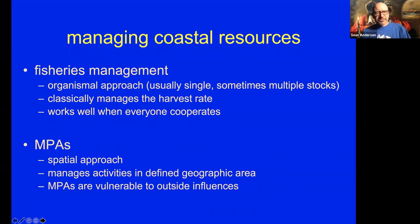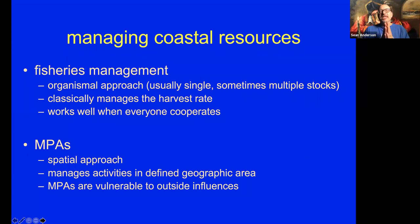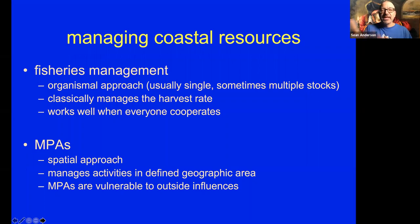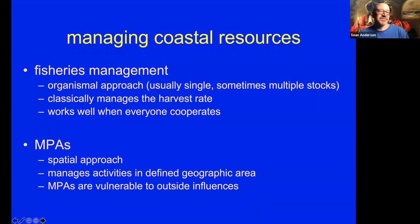Briefly, fisheries management is obviously an organismal approach. Historically these were single-species, but as things have evolved they've become more complex. In California you'll hear things like our groundfish management plan — a suite of phylogenetically different but ecologically similar organisms. The approach here is usually managing one thing: harvest rate — how many critters we take out of that fish population. Generally, fisheries management historically can work well if everyone is on the same page and agreed that this is the way to go forward.